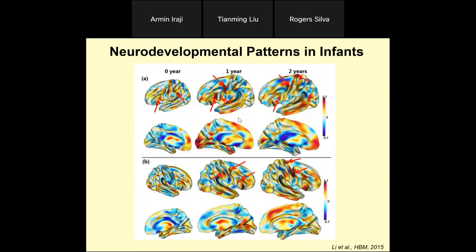We also looked at developmental data from UNC Chapel Hill, which has one of the largest baby connectome projects. We followed infant brains at zero, one, and two years. We found that most fiber endpoints concentrate on gyri and three-hinge gyri, correlated with cortical thickness — the gyrus is thicker than the sulcus and has much denser fiber connection endpoints. This is consistent across different imaging centers, different protocols, different machines, and different ages.